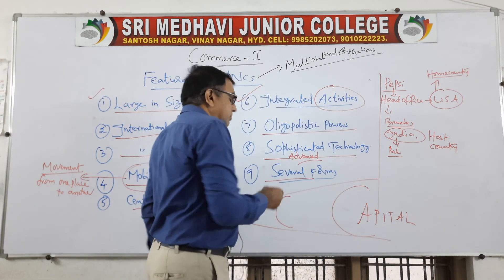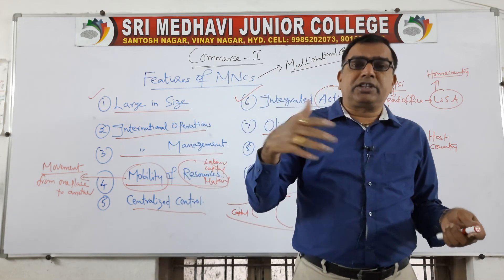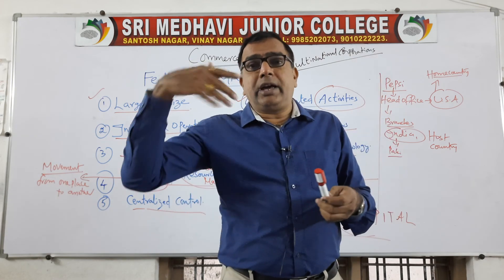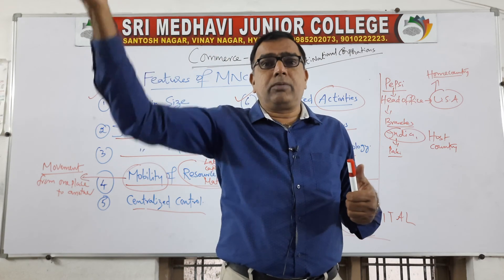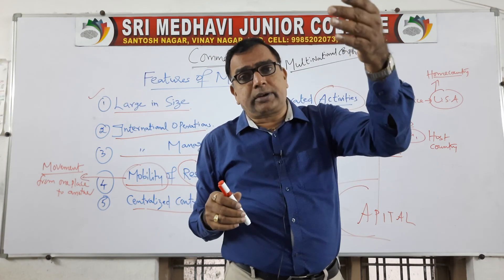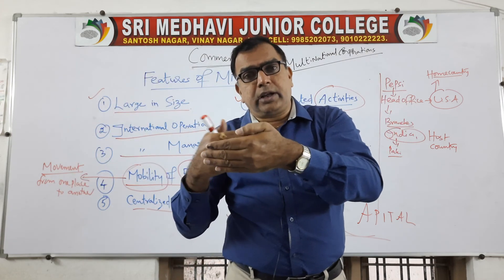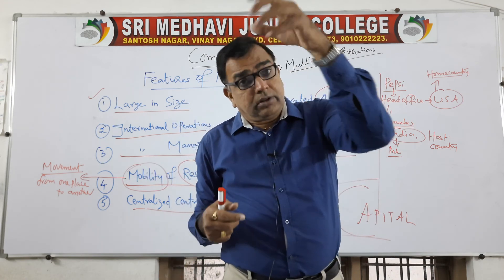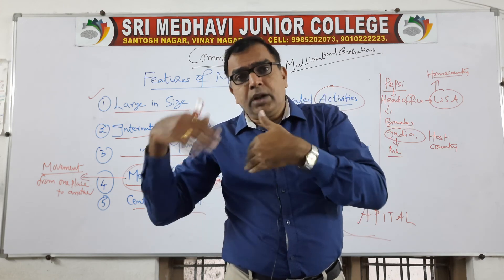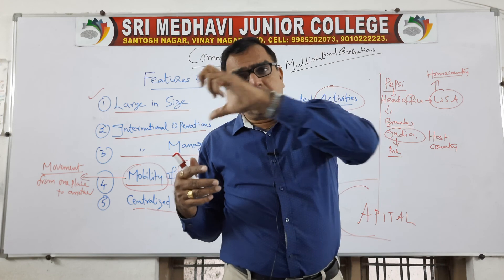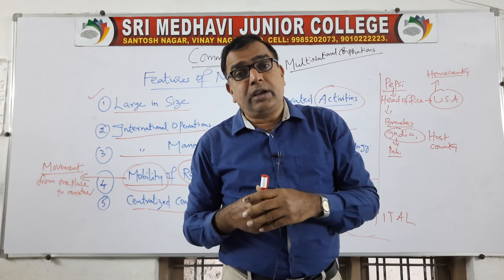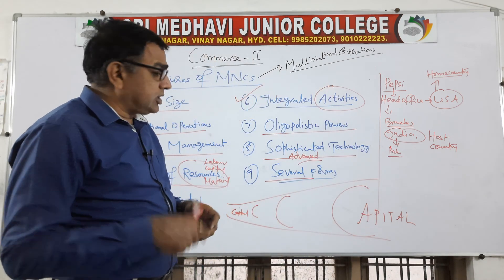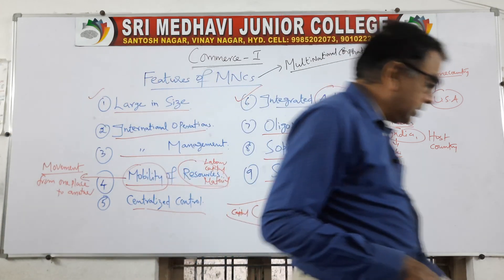Then, several forms — there is no need for an MNC to establish its own factory and plant its company in various host countries. If they want to spread their market and enter the world market, they enter in various forms like joint ventures. They also enter into agreements with other companies in the form of subsidiaries, share activities with existing companies, establish franchises, or give their name to others and monitor from the home country. These are the features of multinational corporations. In the next class, we will be discussing about the advantages of multinational corporations.